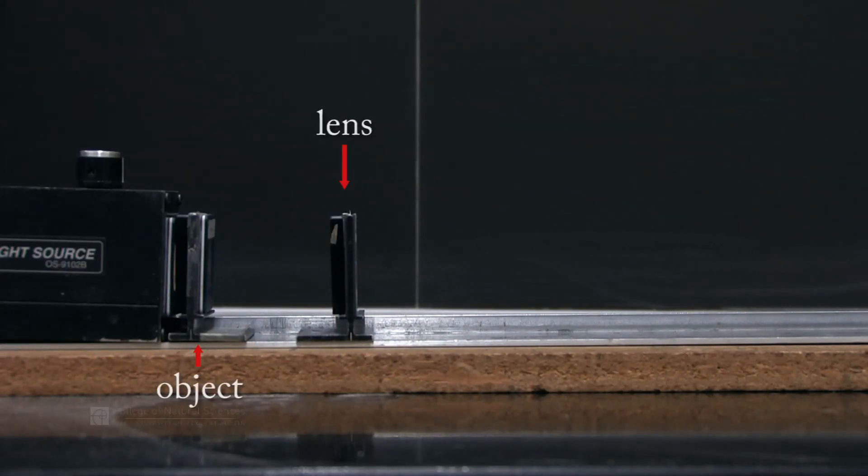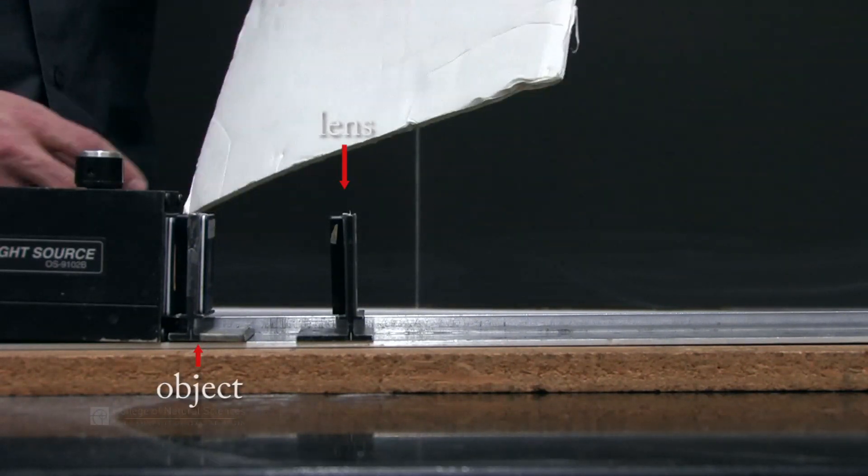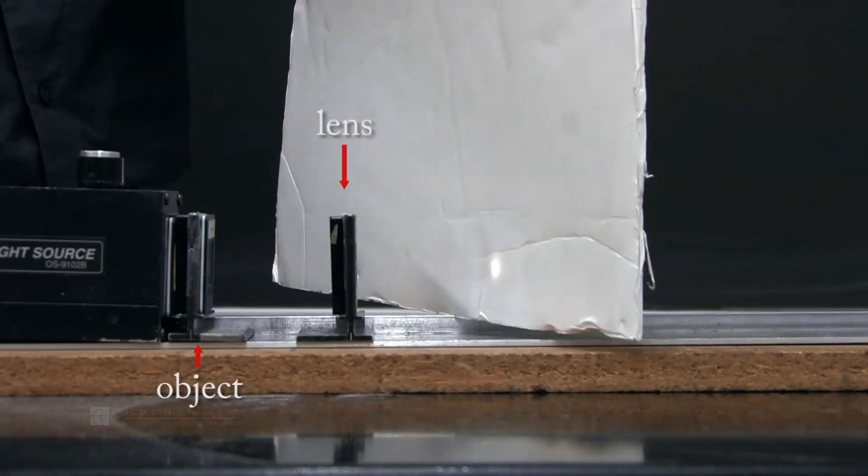If we're confused on what an image looks like, we have a little setup here in front of us that starts off with an object at a certain distance from a lens. When we put a card in front of or behind the lens...